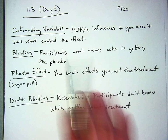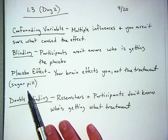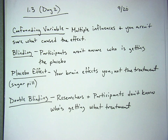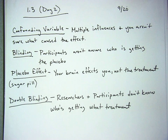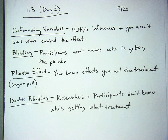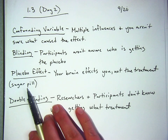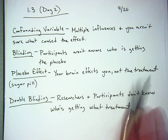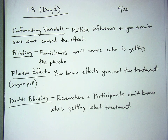Blinding is when participants aren't aware who's getting a placebo. A placebo is a sugar pill — people think they're getting a medication but the pill doesn't have any active ingredients in it. It's to test whether just the act of taking a pill and believing you'll get better actually causes improvement. The brain is a powerful thing and it affects people that way. That's what the placebo effect is: when your brain affects you, not the treatment — you believe you're getting better and therefore you do.